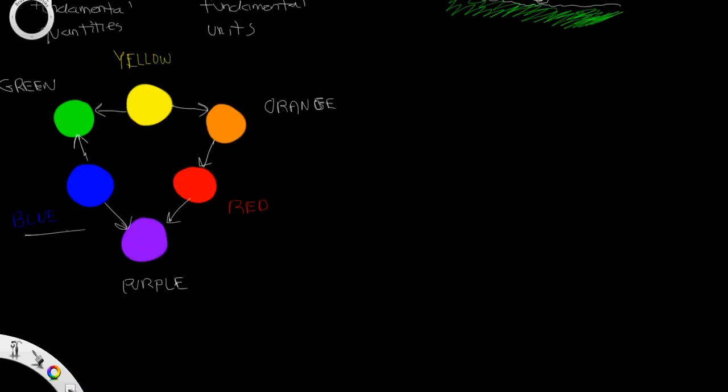...blue, red, and yellow are utilized to produce all the other colors that we utilize, such as blue and yellow making green, yellow and red making orange, and blue and red producing purple.